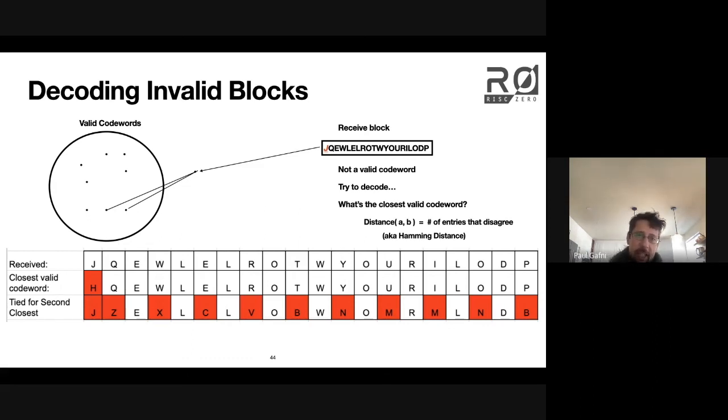The key value of Reed-Solomon encoding is the code words are pretty far apart from each other. In particular, degree nine polynomials can't agree in like 15 places. They can't agree in any more than 10 places unless they're exactly identical. Reed-Solomon encoding makes use of the fact that low degree polynomials can't share very many points in order to decode potential errors.